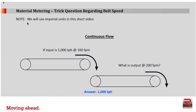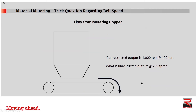By the way, we are using imperial units in this video. Now let's take a look at the trick question regarding belt speed when we consider flow from a metering hopper. Imagine that the amount of material in the hopper is unlimited and the output is unrestricted — in other words, the opening is big enough to let any amount come out. So if we have a hopper feeder conveyor with a belt speed of 100 feet per minute moving material from the hopper at 1000 tons per hour, what is the output if we speed the conveyor belt up to 200 feet per minute? The answer is 2000 tons per hour because the handling rate is linearly proportional to the belt speed in this instance.